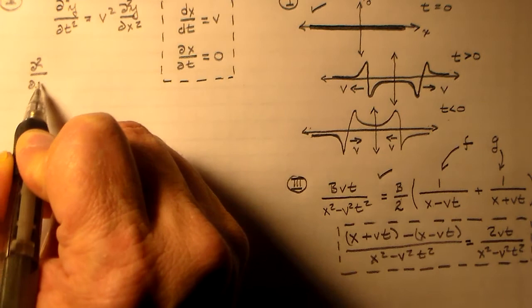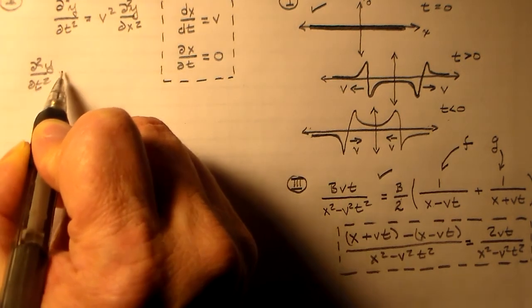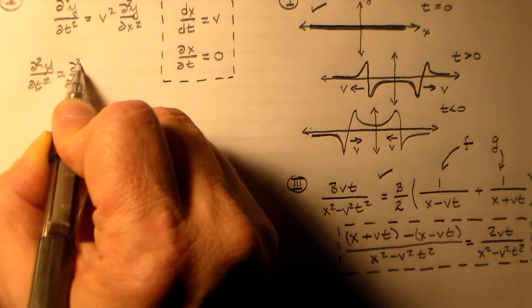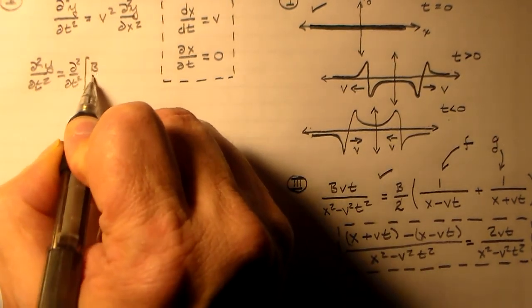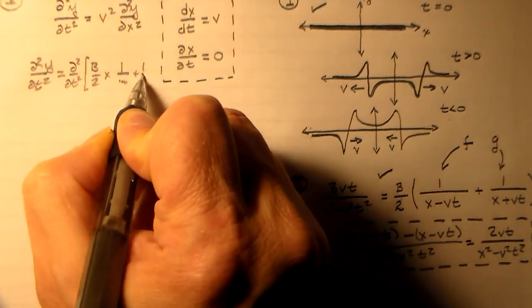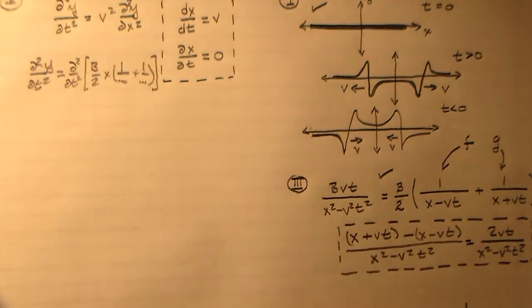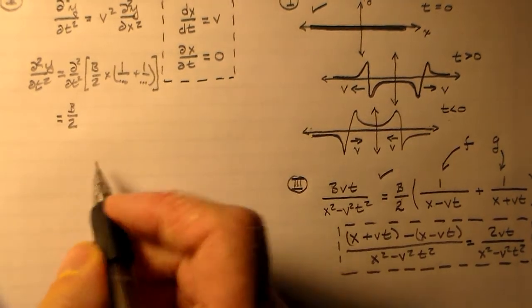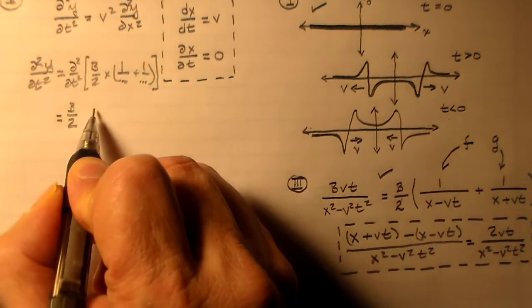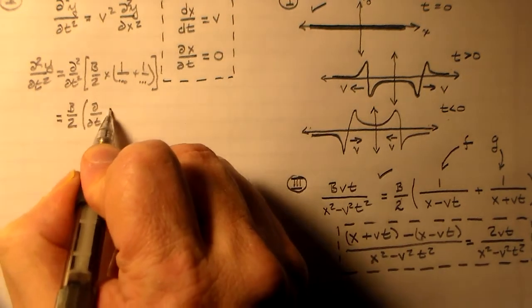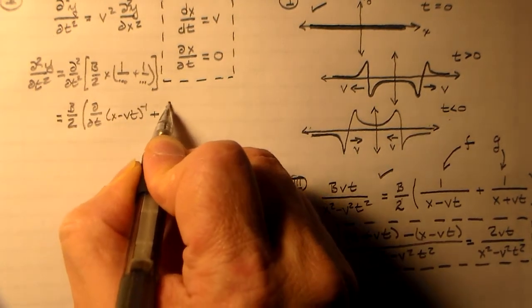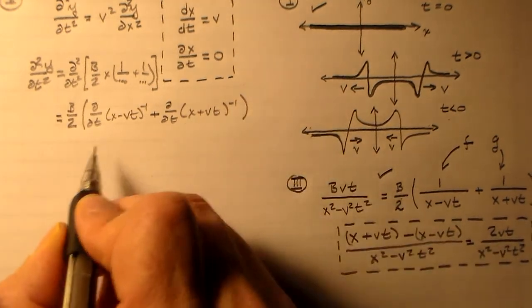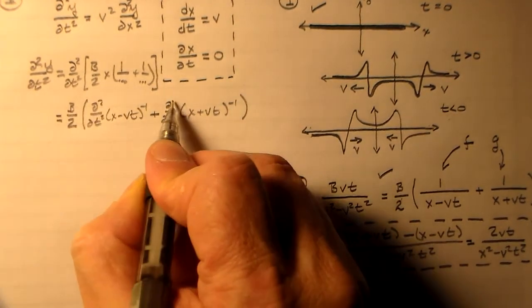So we've got d squared, d, dt squared with respect to y of this thing is d dt, squaring those things. b over 2 times 1 over blah plus 1 over blah, where I've got blah all the way down here, so I'm not worried about it at this point. So I can bring the b over 2 out, right? And then I just take the derivatives of each one of these. All right, so d dt, x minus vt to the minus 1 plus d dt, x plus vt to the minus 1. And I, oh, okay, I better put these back on there. All right.